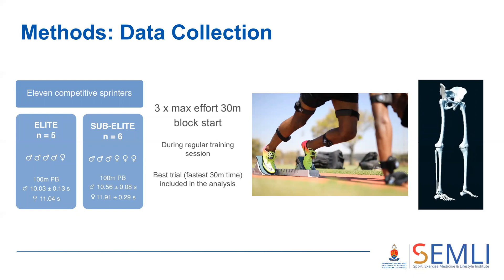Athletes were instrumented with Noraxon MyoMotion tri-axial inertial measurement units sampling at 200 Hz, with units placed on the lateral aspects of both thighs, and synchronized video was captured at 100 Hz. Calibration was performed in a neutral upright standing posture which established a zero-degree orientation angle for the thigh segment. Sagittal plane deviation of the segment from this position was defined as positive in the direction of hip flexion.